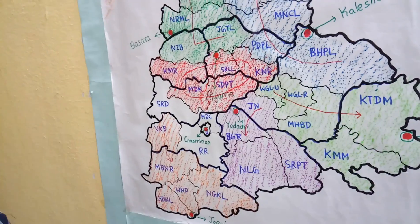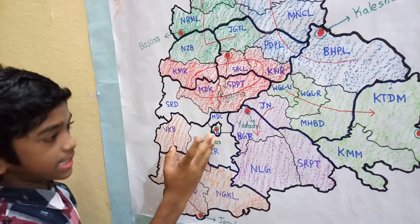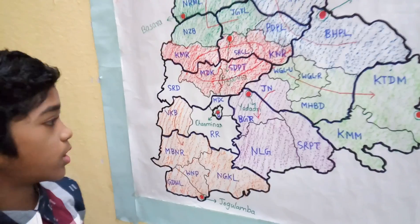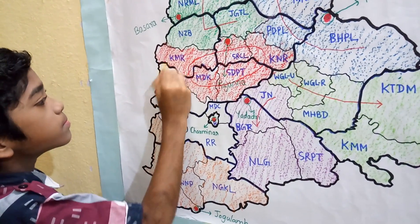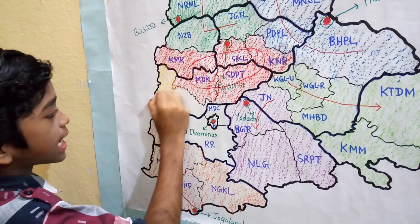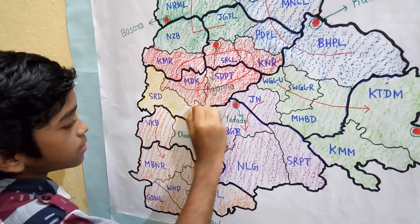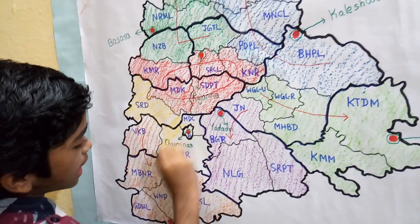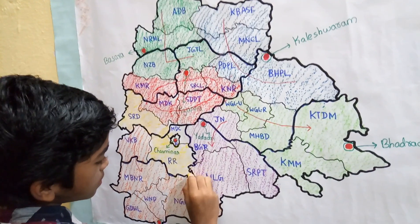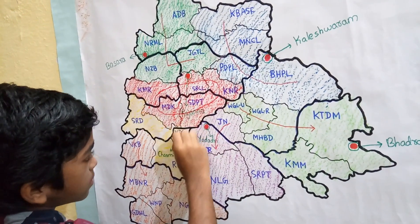So, the remaining 4 districts come under Charminar zone. They are Sangareddy, Rangareddy, Hyderabad, and Medchal.